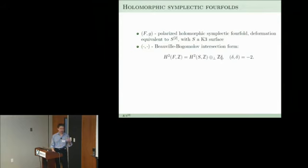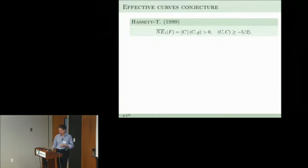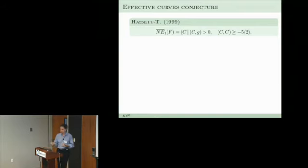For Hilb^2(S) starting from the K3 we have the quadratic form coming from the intersection form of the K3, plus an extra class — the class of the diagonal — which is orthogonal to the rest with square minus 2, so we know what that lattice is. We also have curve classes and the duality pairing, giving a quadratic form on H_2. Brendan and I were looking at these varieties and interested in the description of the cone of ample divisors and effective curves on these fourfolds.